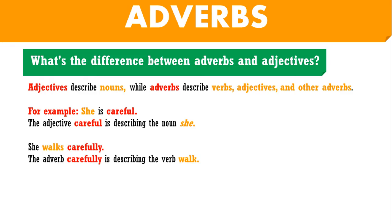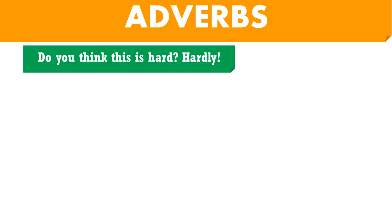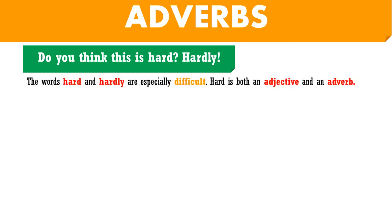Sometimes it is complicated. Some words act as both an adjective and an adverb, and even native speakers sometimes confuse them. The words 'hard' and 'hardly' are especially difficult. 'Hard' is both an adjective and an adverb. You can say 'The bed was hard,' using the adjective, meaning it is very firm. You can also say 'I worked hard,' using the adverb, meaning with a lot of effort.